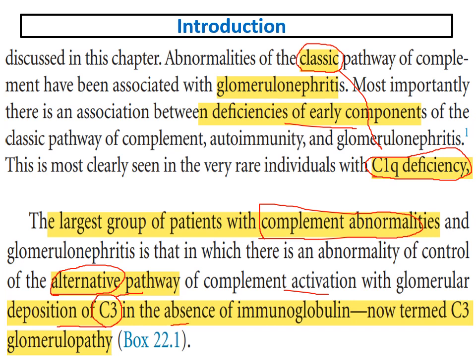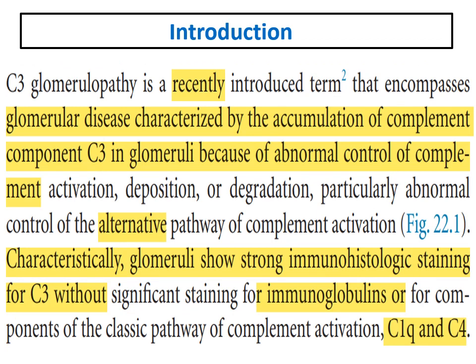Most cases due to complement abnormalities occur in the alternative pathway, which causes glomerular deposition of C3 with absence of immunoglobulin deposition in glomeruli — only C3. This is now termed C3 glomerulopathy. C3 glomerulopathy is characterized by accumulation of C3 in glomeruli due to abnormal control of the alternative complement pathway.